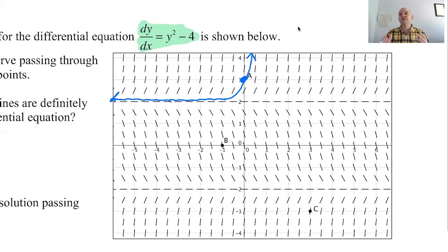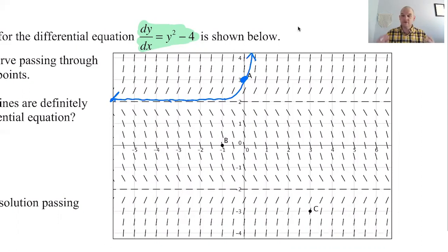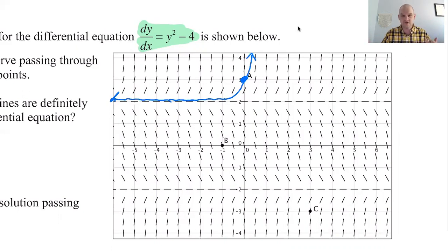When you look at the slope field, if you can see a line anywhere in it — like a linear function passing through it — that's going to end up being an asymptote for any solution that approaches it.